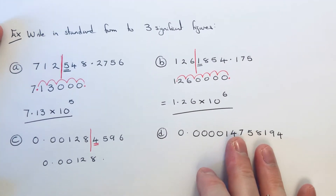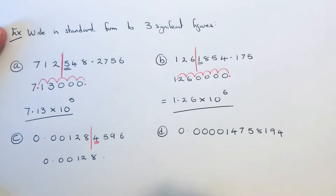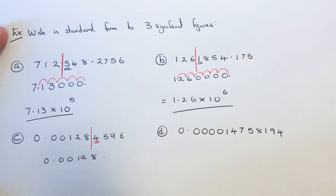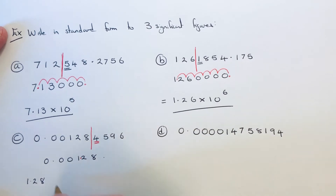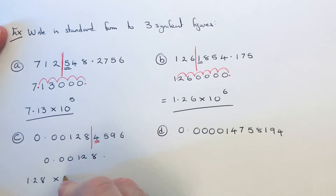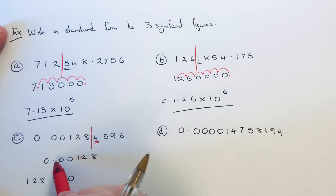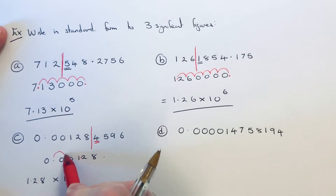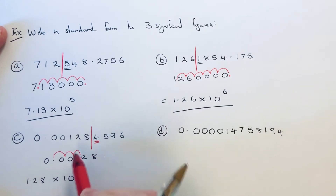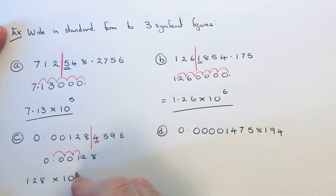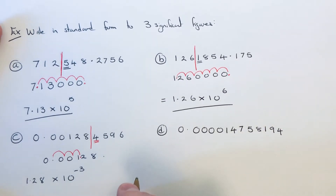We just need to write this in standard form now. We put our decimal point in here, so it's 1.28, times 10. Count the number of jumps between the two decimals: one, two, three — but you need to add a negative power because it is a small number. So the answer is 1.28 × 10^-3.